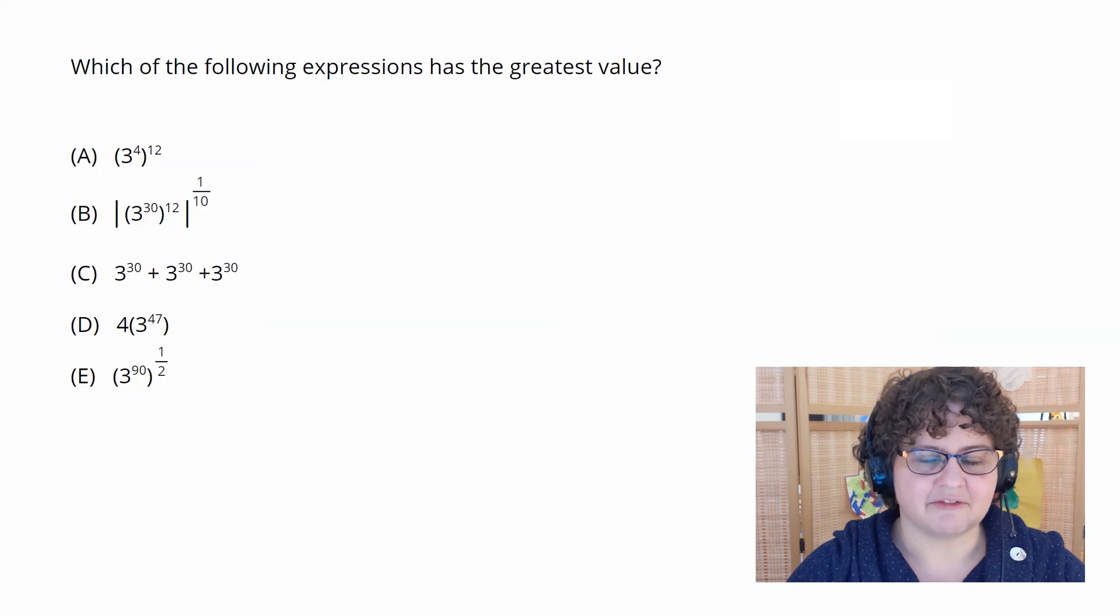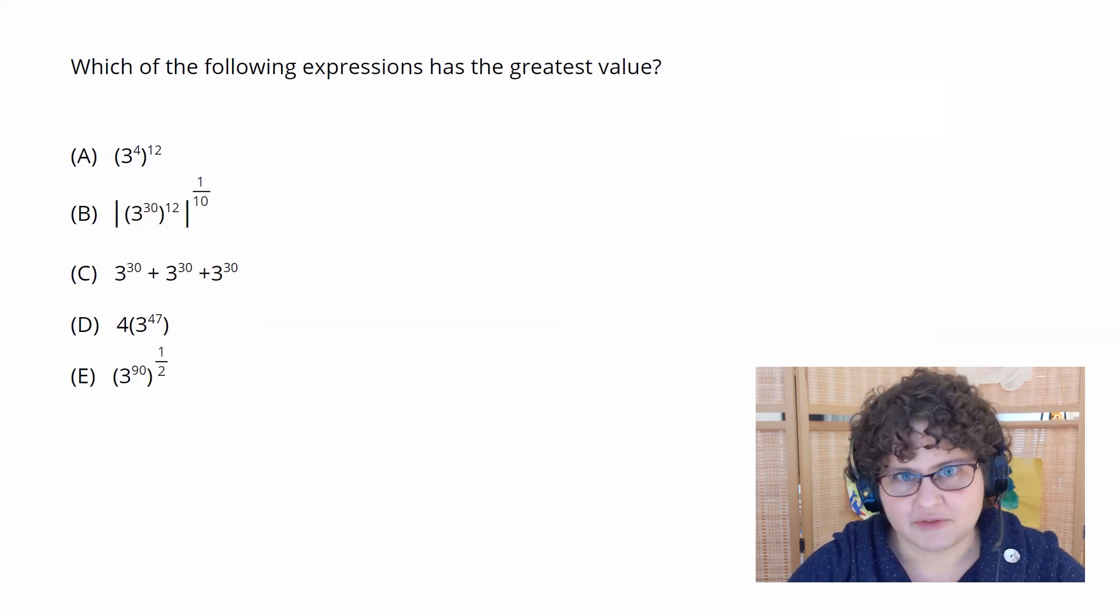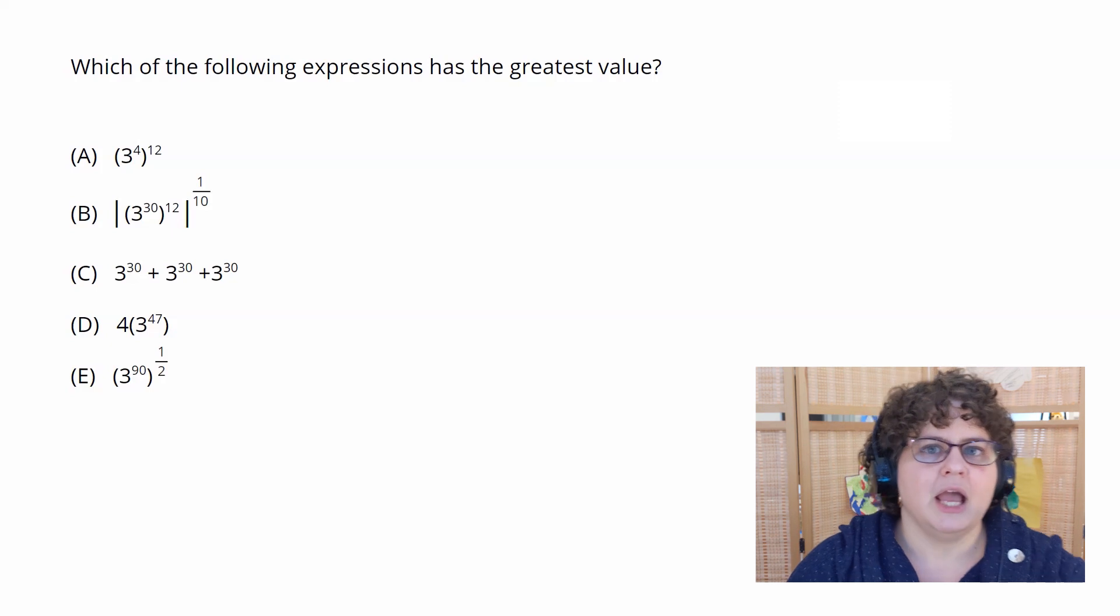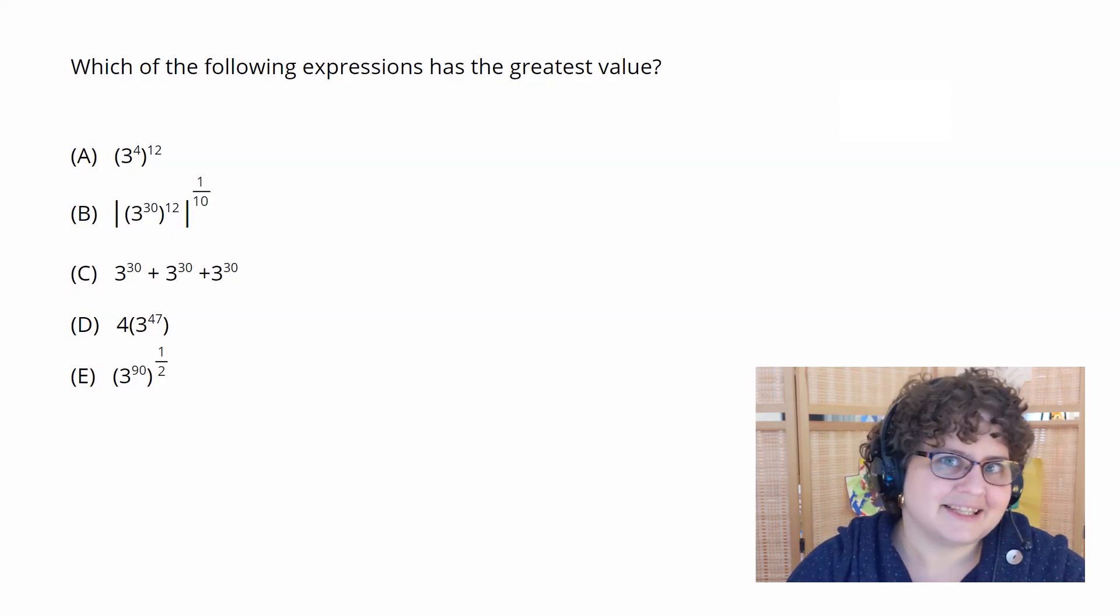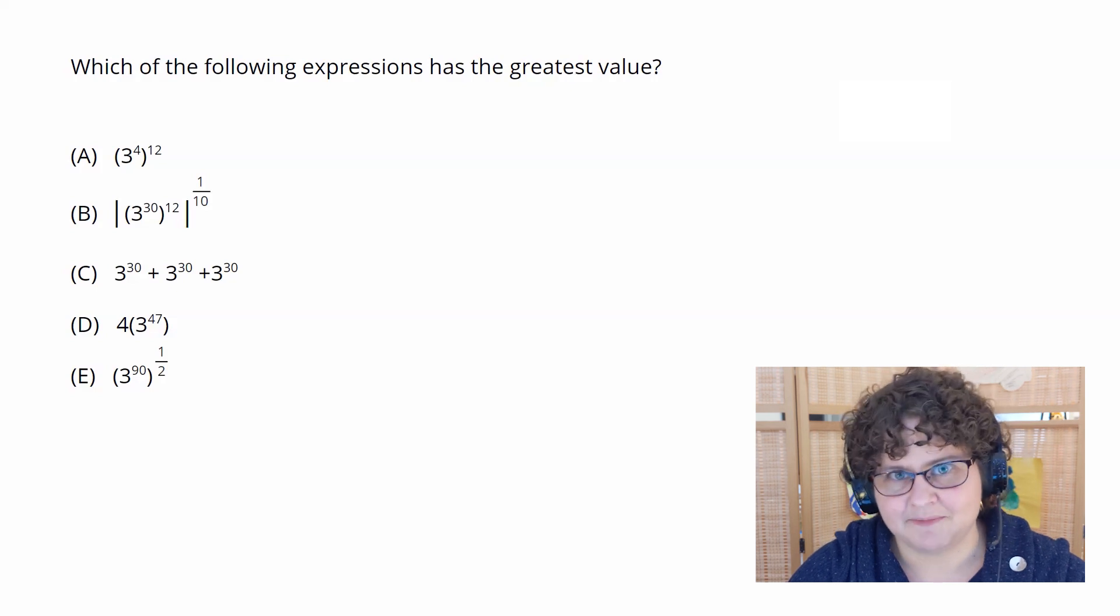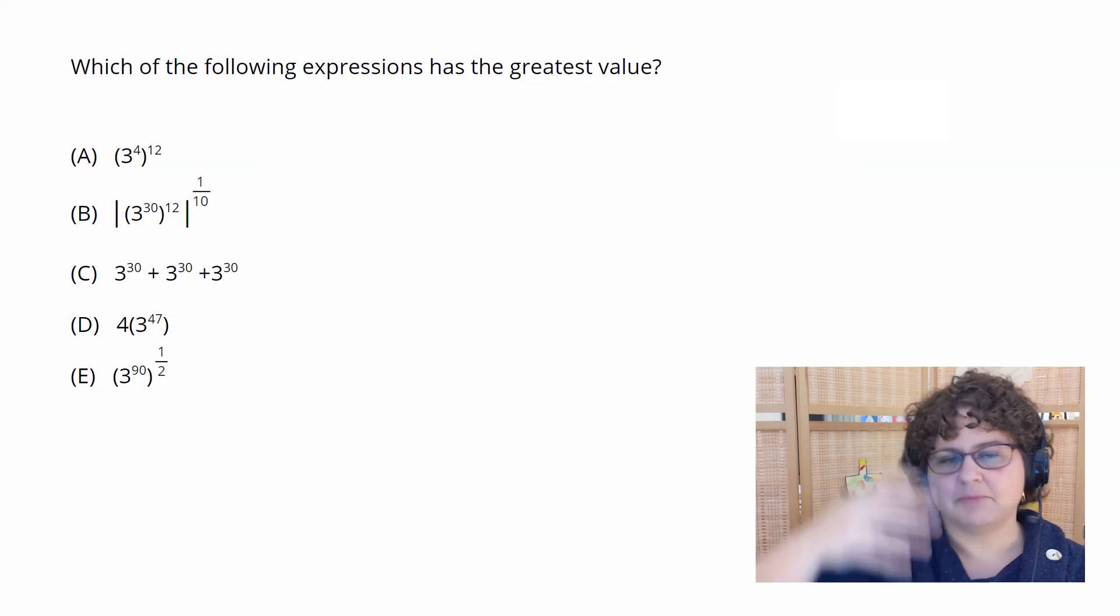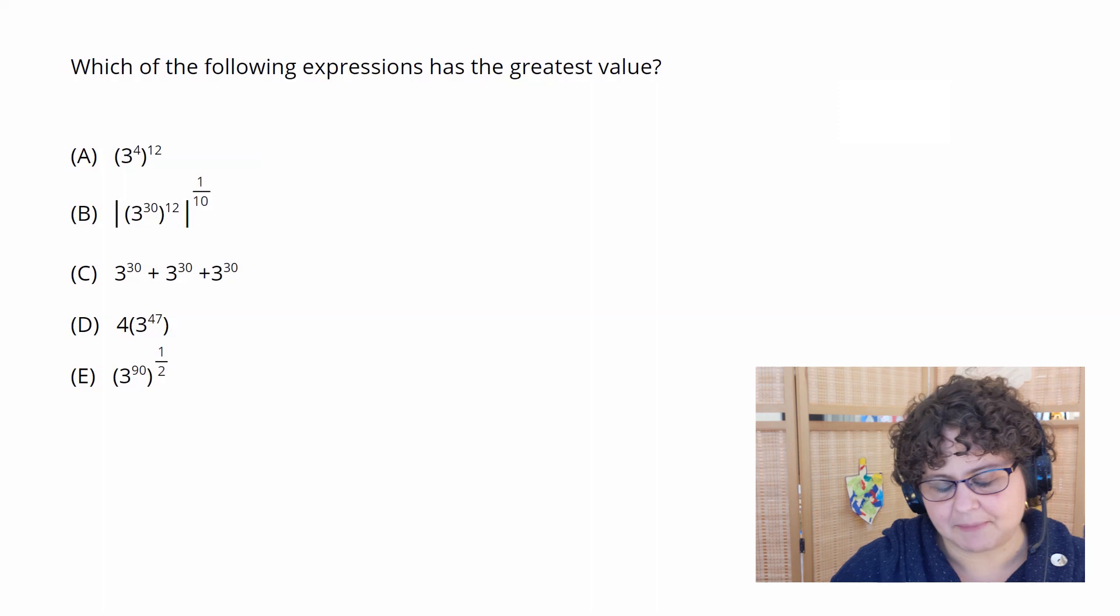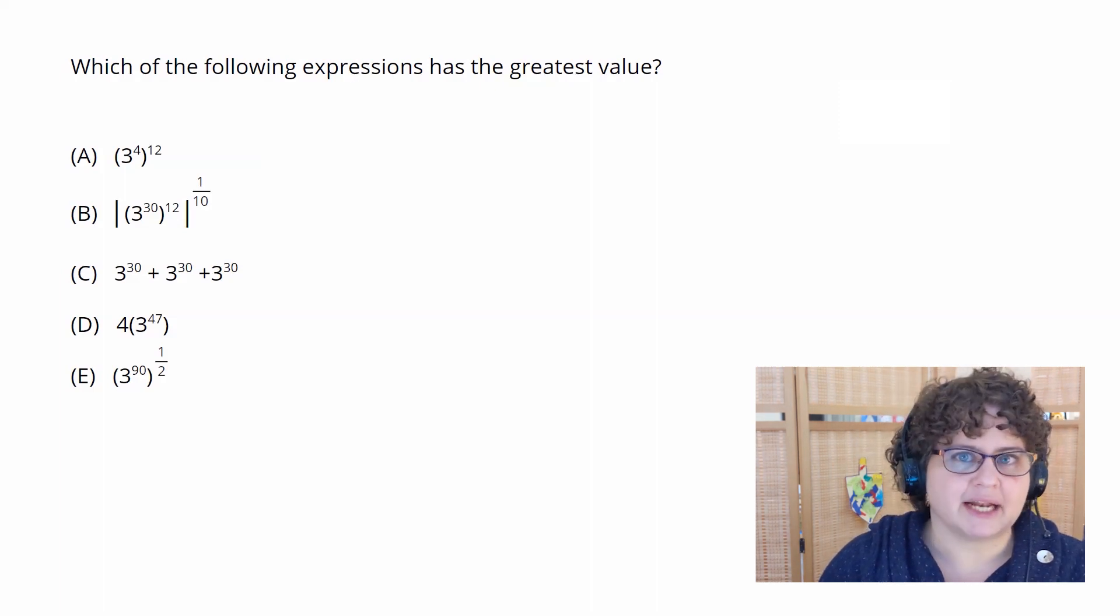So you likely discovered that there were a couple of different routes you could take to solve this. All of them require a pretty firm knowledge of exponents, but some of them are still better than others. The answer choices are all non-simplified exponential terms, meaning one option would be to go through every single answer choice, simplify it to essentially a single term, and then compare them. And that would work, but that's also going to take you a lot of time.